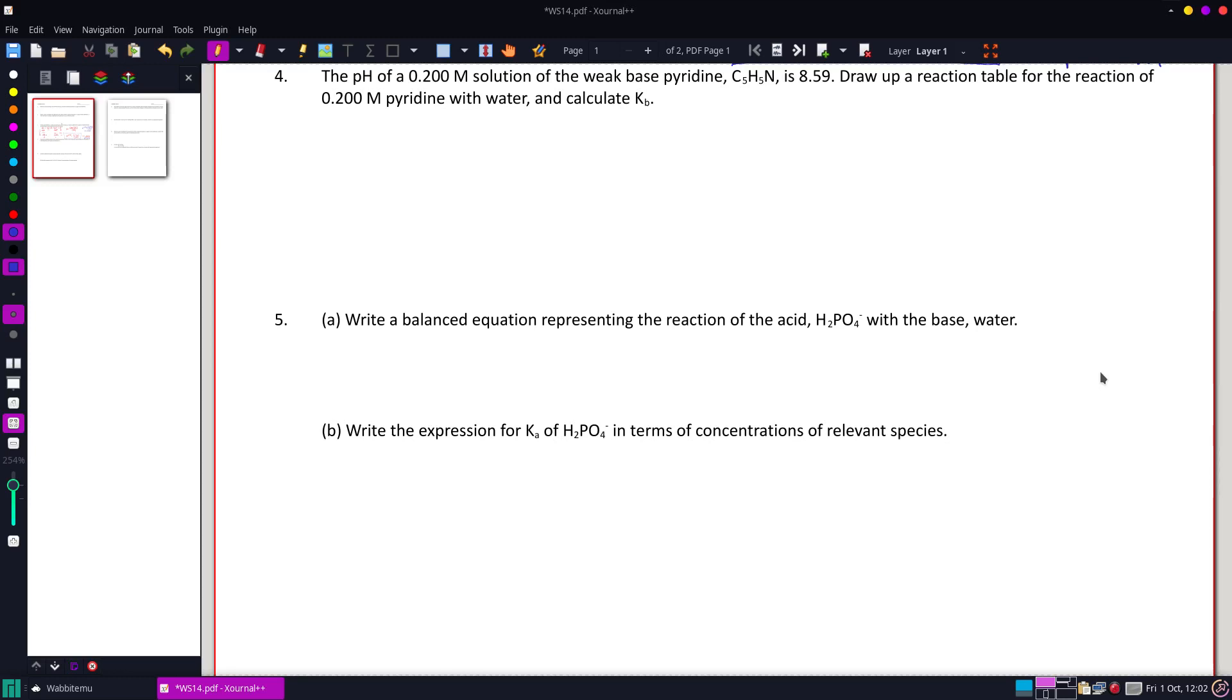All right, looking at number four here. The pH of a 0.2 molar solution of the weak base pyridine is 8.59. Draw up a reaction table for the reaction of 0.2 molar pyridine with water and calculate the Kb.